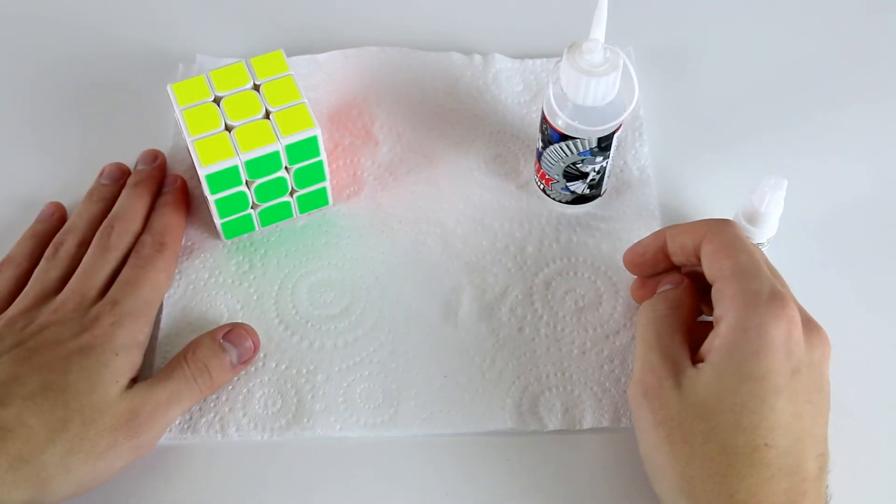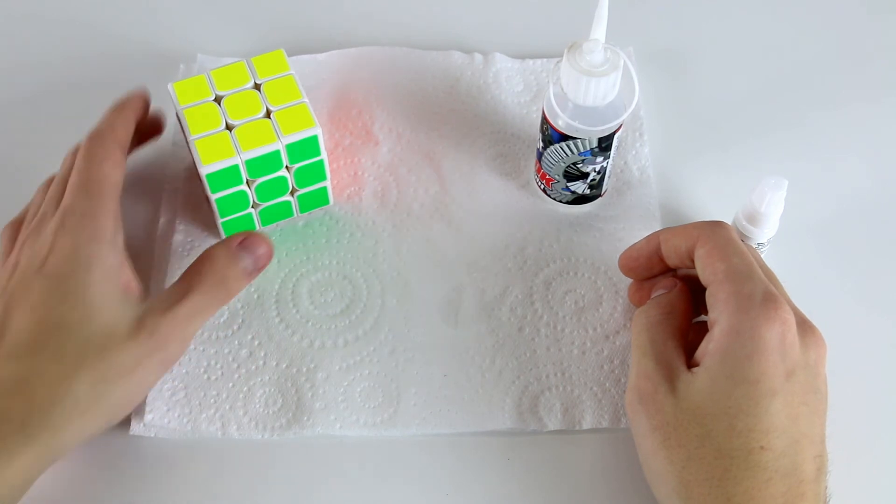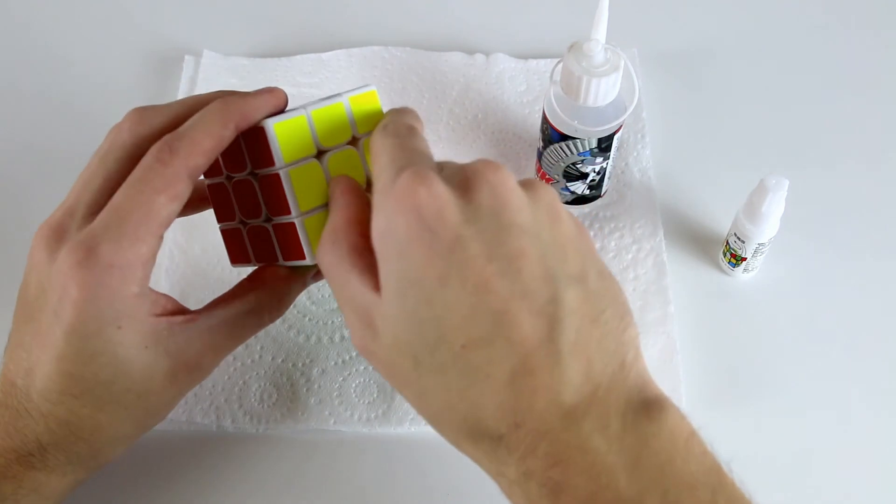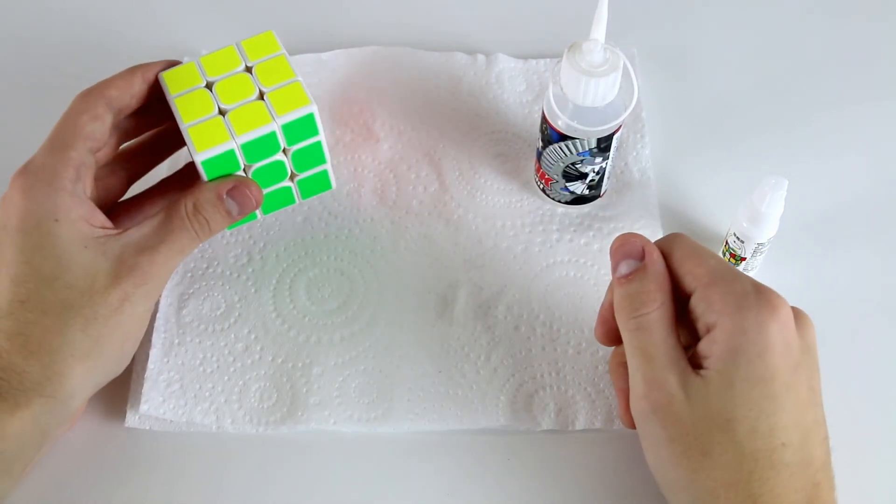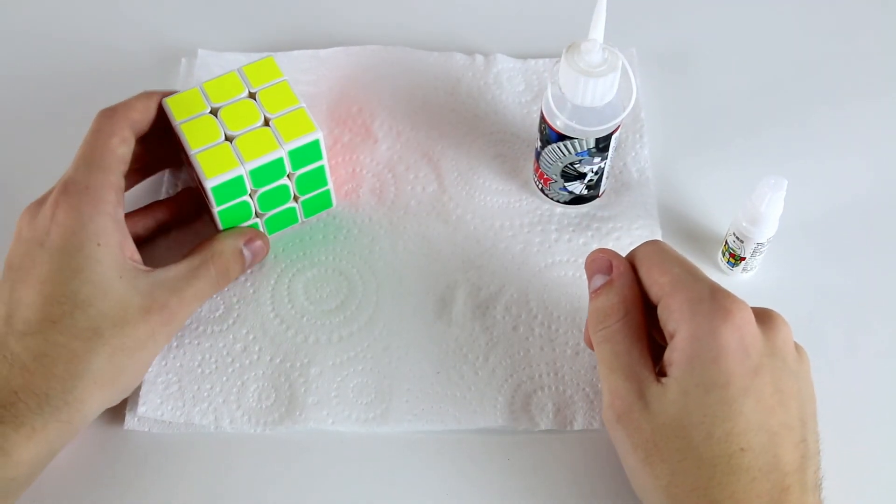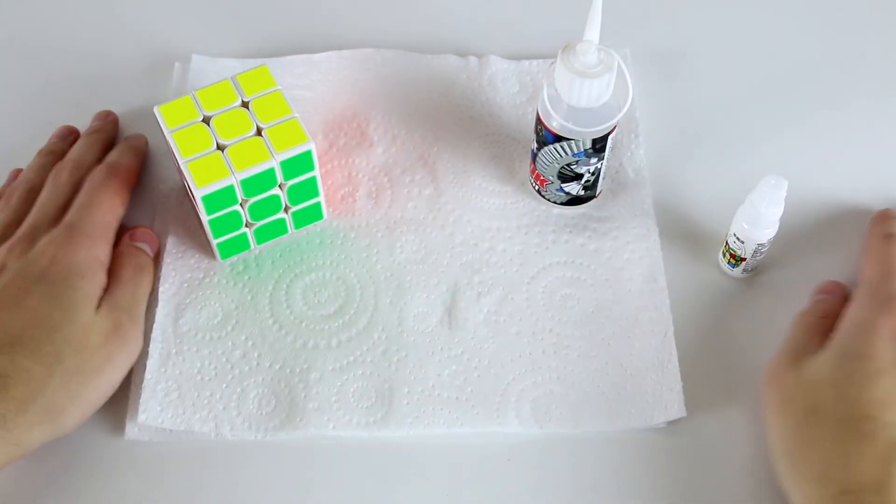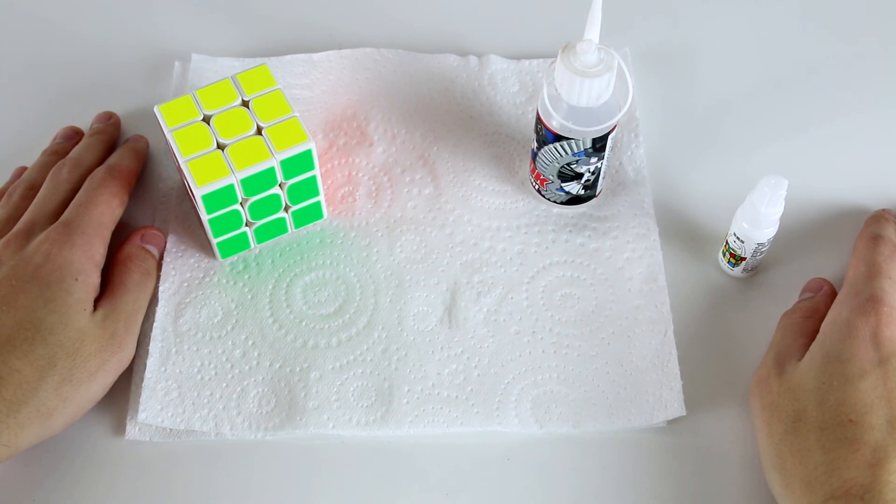So in conclusion the two main ways in which you can adjust the performance and feel of a speedcube are to number one adjust the tensions by taking off the center cap and tightening or loosening the screw or other system there and the second way is by lubricating your cube and there's a range of different weights and types of lubricants which you can experiment with.